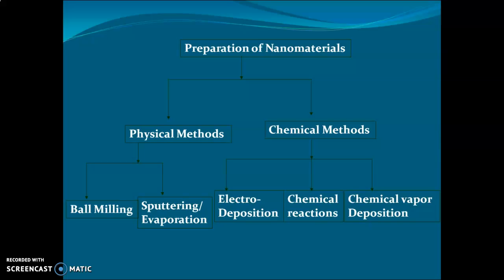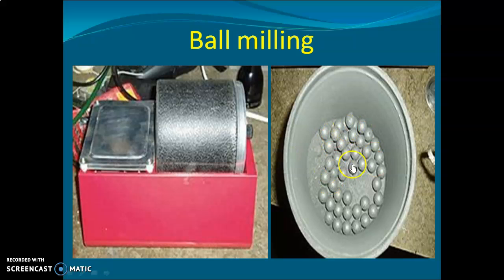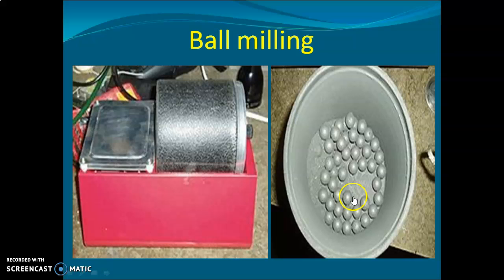The first technique is ball milling. Ball milling is a technique used to make powder in nano size — down to 10 to the power of minus 9 meters. The cost of the instrument is approximately 1.5 lakhs. The machine contains alloy balls which grind the material into very fine powder at the nanoscale.